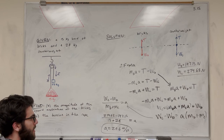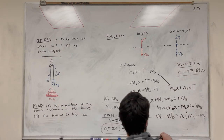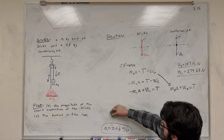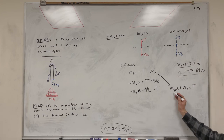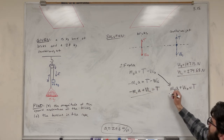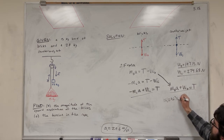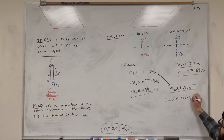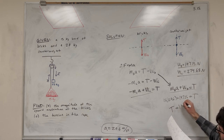Now for Part C, we want to solve for tension in the rope. Now that we have acceleration, we can plug into the bricks equation. Mass of bricks times acceleration plus weight of bricks equals tension: 15 times 2.96 plus 147.15 gives tension equal to 191 newtons. That's Part C.